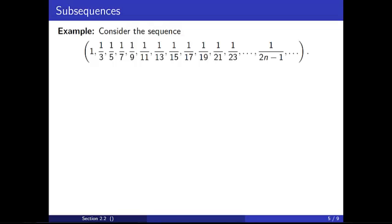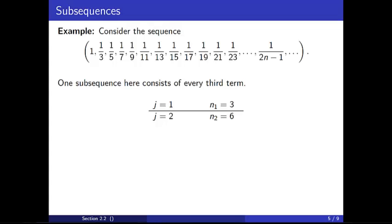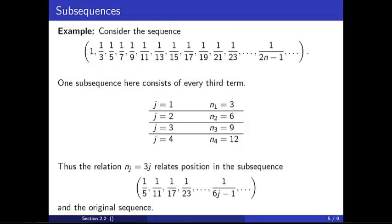Next consider the sequence 1, 1/3, 1/5, 1/7, and so on. One subsequence here consists of every third term. For the first term we take the third term from the original: n_1=3. For the second term we take the sixth: n_2=6. For the third term we take the ninth: n_3=9. For the fourth term we take the twelfth: n_4=12. Thus the relation n_j = 3j relates position in the subsequence to position in the original, giving the subsequence 1/5, 1/11, 1/17, 1/23, and so on.